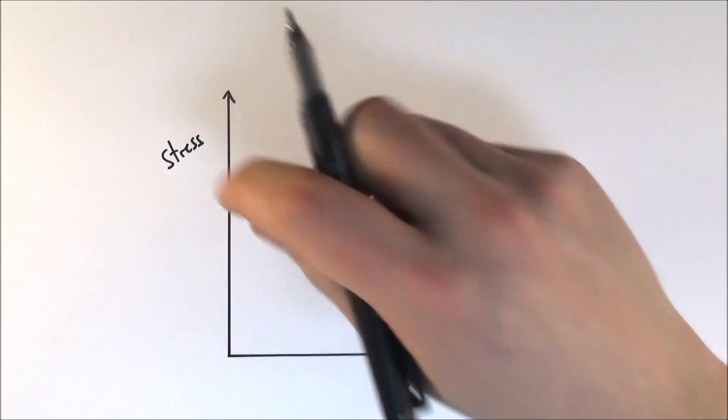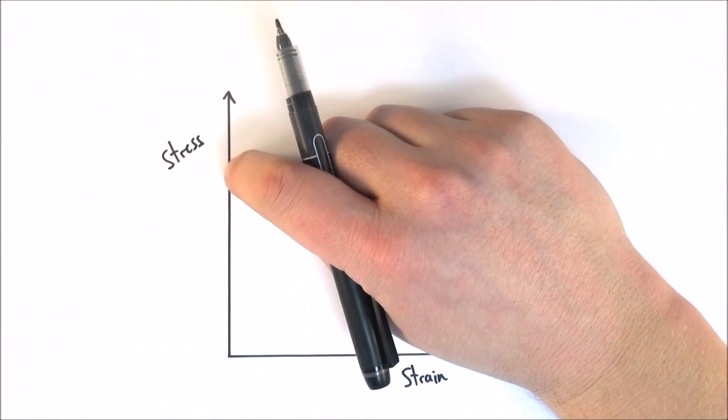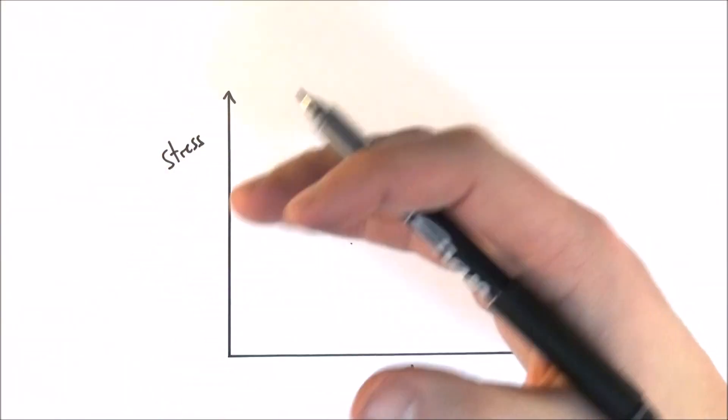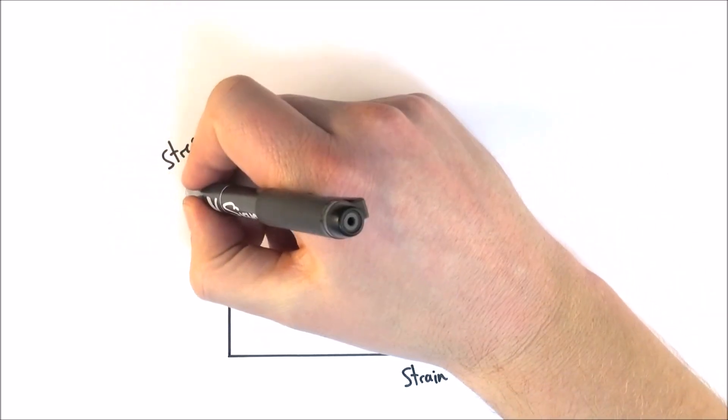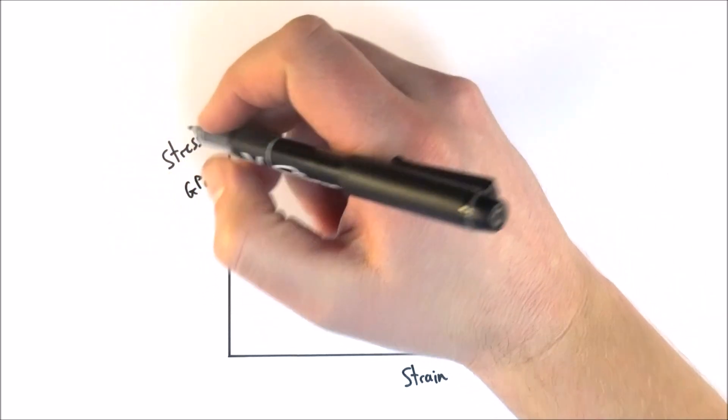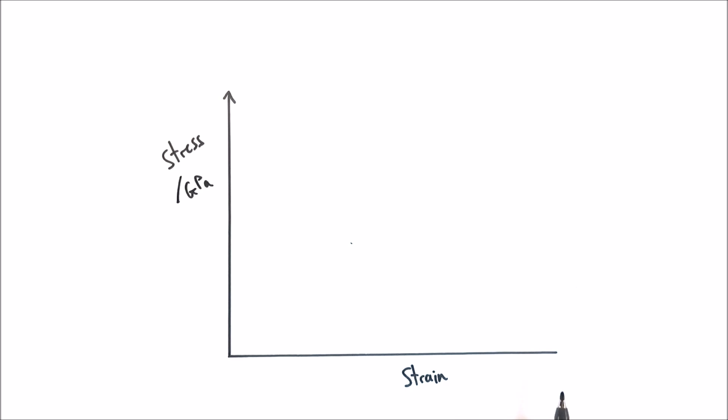Now stress is measured in pascals or newtons per square meter, but when we have metals they tend to have quite a high stress, so we often talk about things in terms of maybe gigapascals. Strain, on the other hand, is just a ratio of a length to the length, so it has no units.